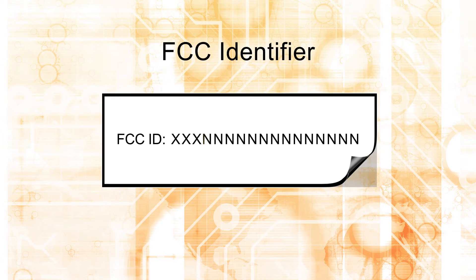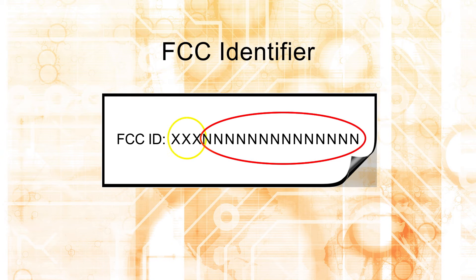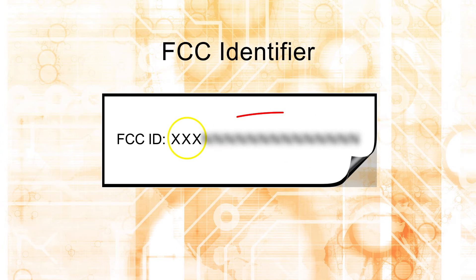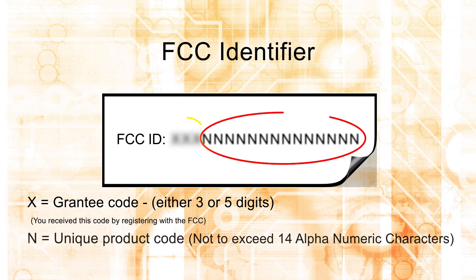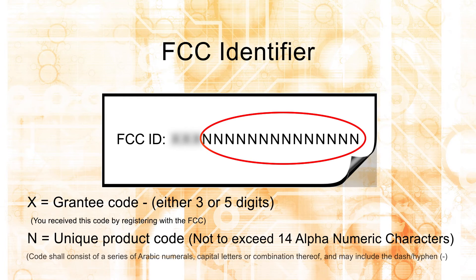Taking these requirements into account, the FCC ID is made up of two parts. First is your three- or five-digit grantee code, consisting of alphanumeric characters assigned to you by the FCC when you registered for a grantee code, along with the unique product code assigned by the grantee for the device that may be 1 to 14 characters long.